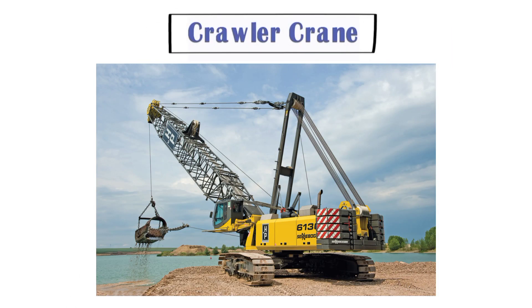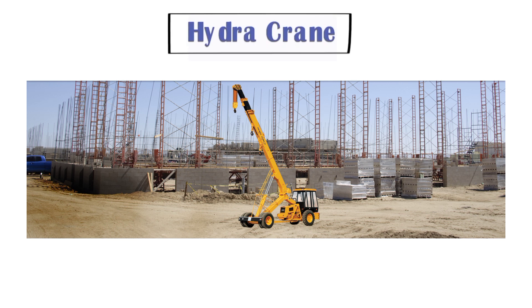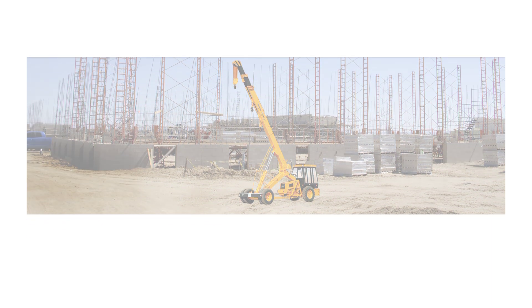Next is the crawler crane. The crawler crane is fixed on a crawler, which is why it is called a crawler crane. It is mainly used for heavy lifting and can lift any load according to its capacity and rotate 360 degrees. Next comes the hydra crane, also called a pick and carry crane, because it can carry any load according to its capacity from one place to another.